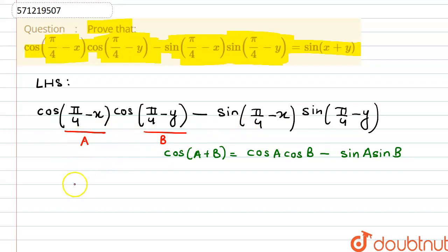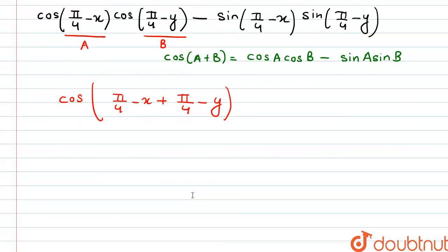So, we can write this as cos of a plus b, that is pi by 4 minus x plus pi by 4 minus y. Or, if we add pi by 4 plus pi by 4, we get cos of pi by 2 minus x minus y.